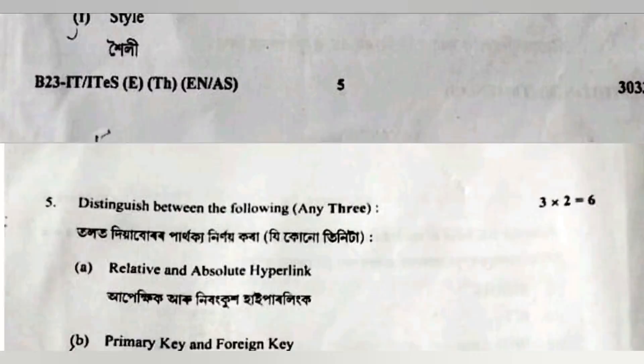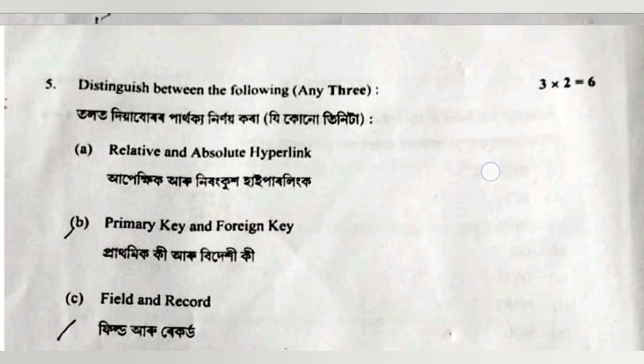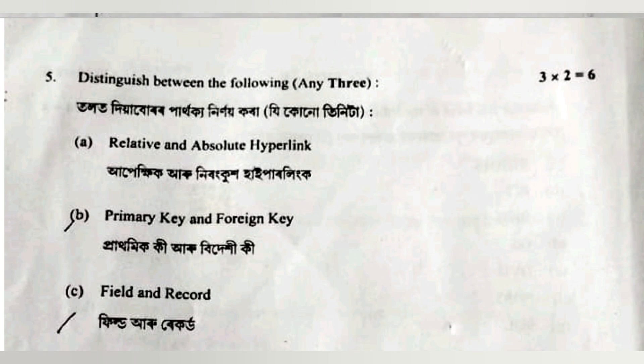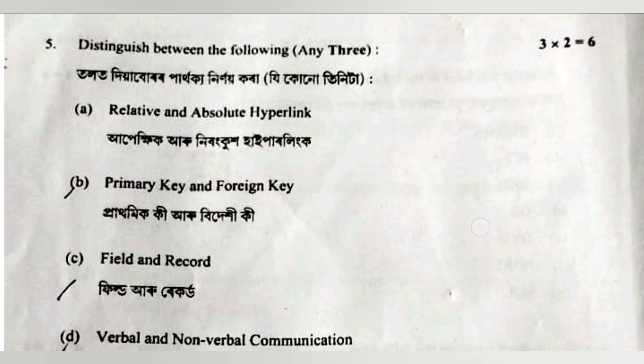Question number five: relative and absolute. In relative, we get a partial URL — the relative URL of a hyperlink passes a partial address. But in absolute, it passes the complete address. I will tell you the same thing, because it is for two marks.